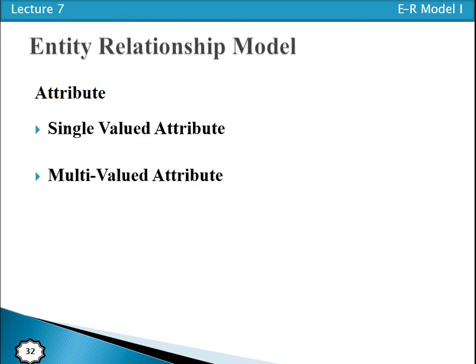Now we have single value attribute and multi-value attribute. A single value attribute is one that may take only a single value for a given entity instance. For example, student ID, registration number, and name — one student has only one name. For one instance we have only one value — student name is one, address is one. So that is a single value attribute.